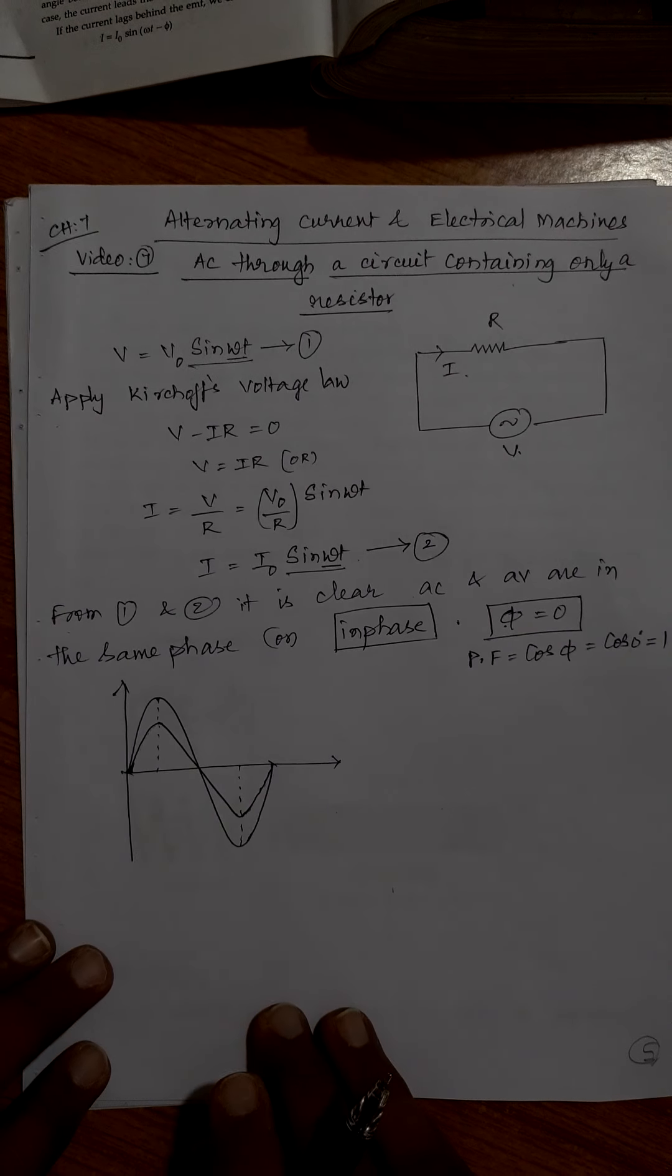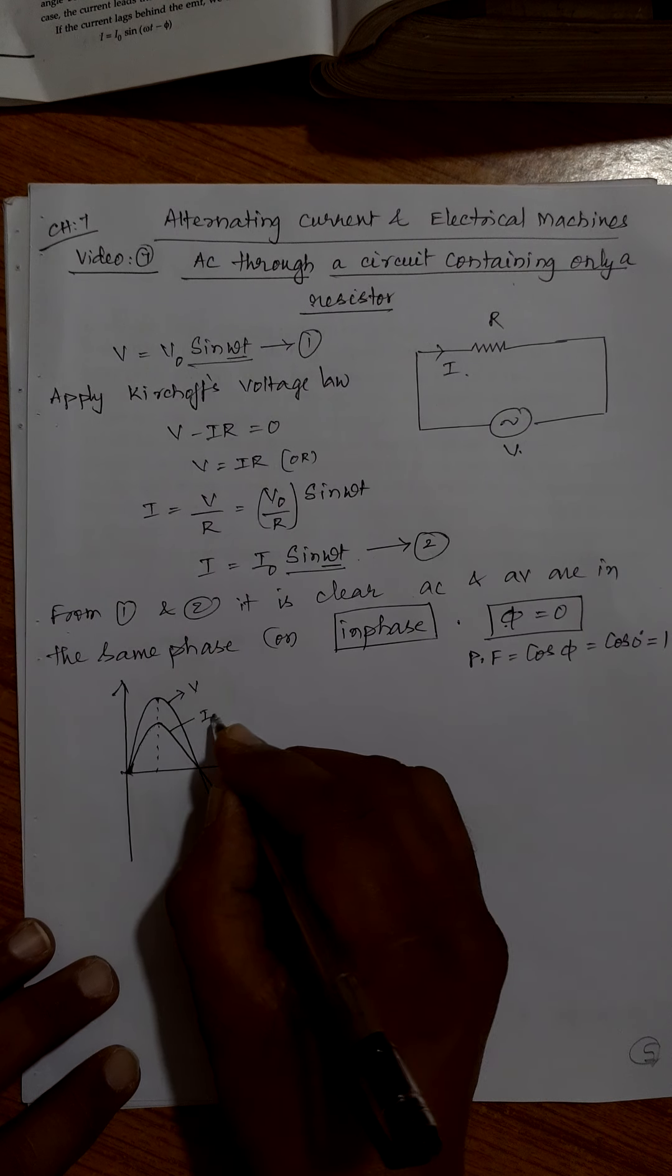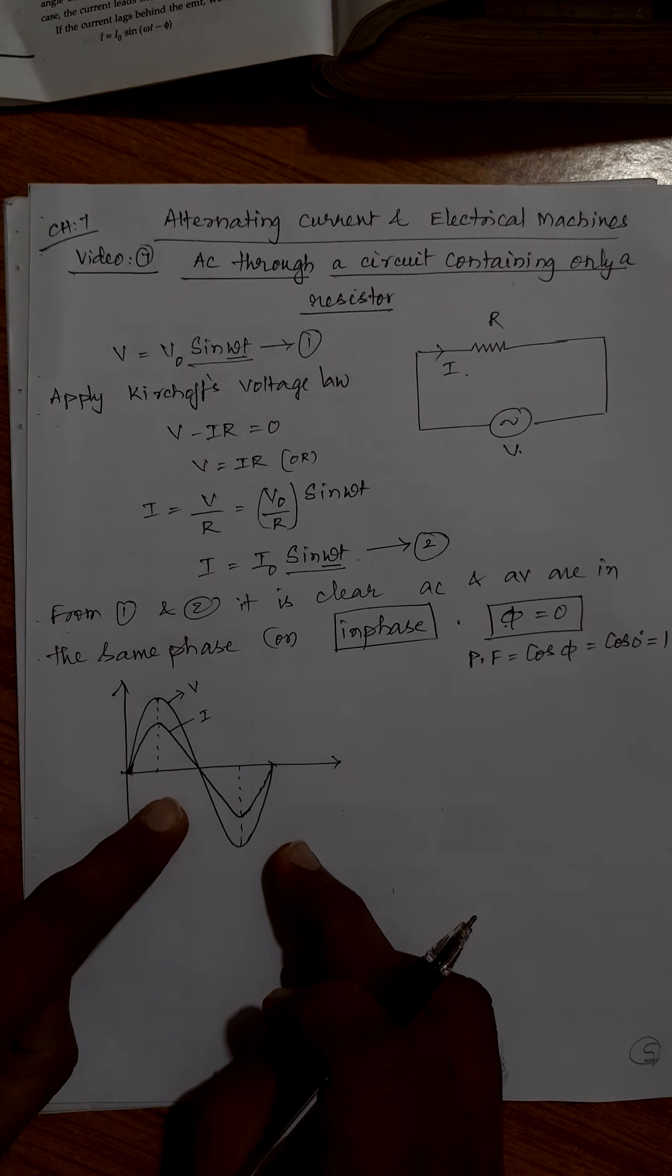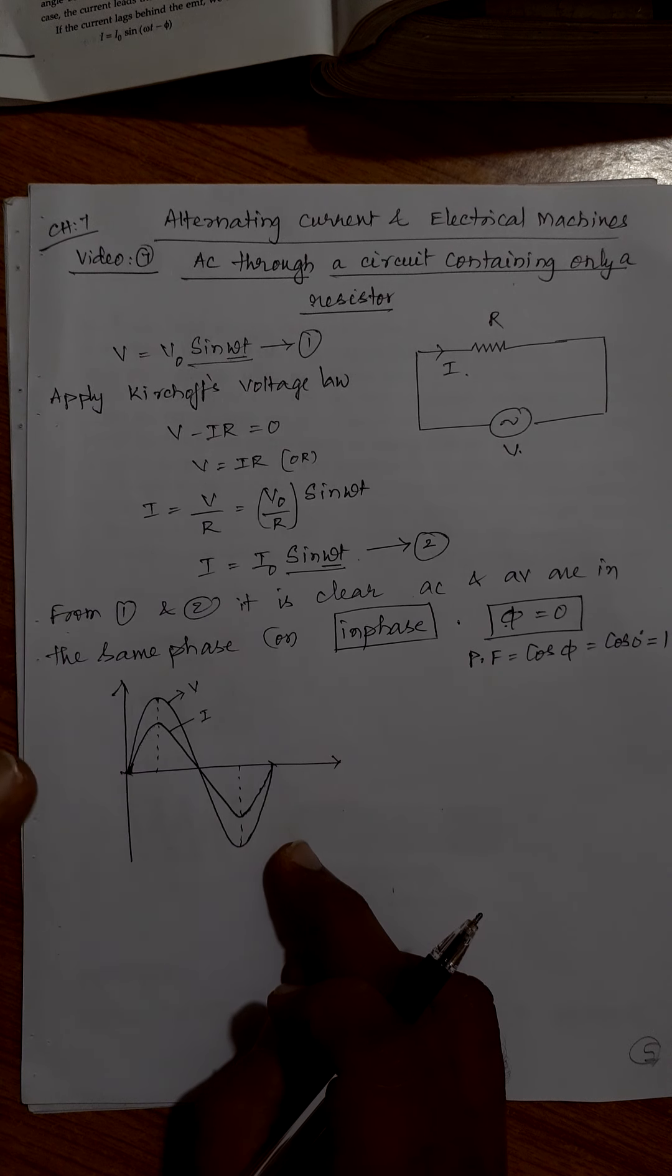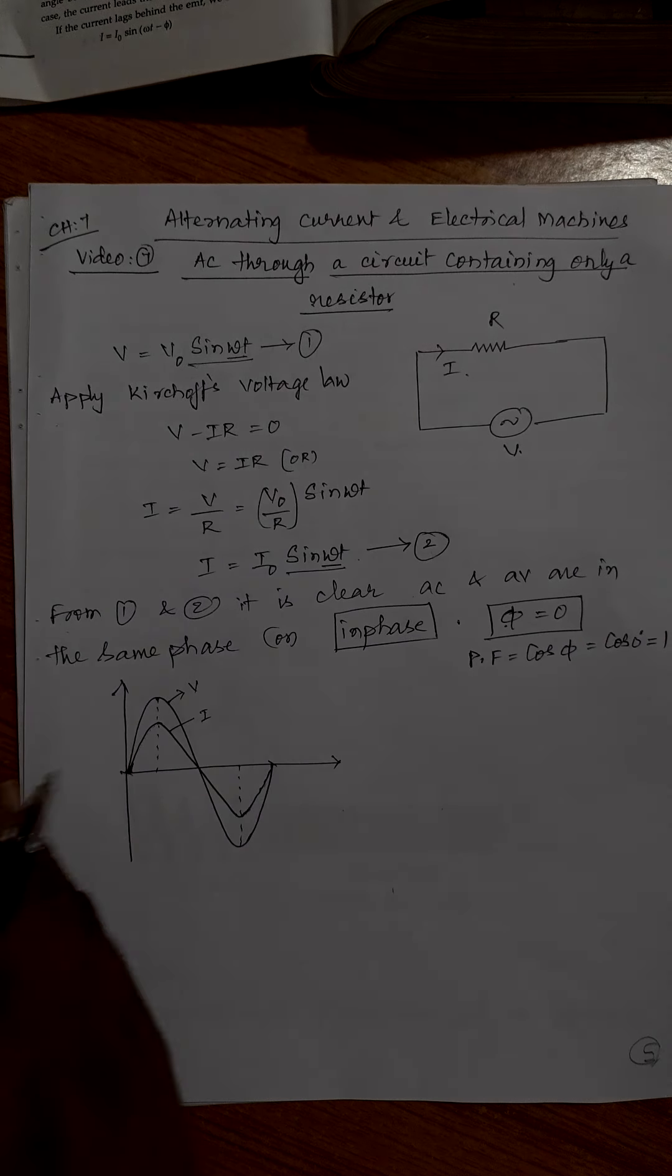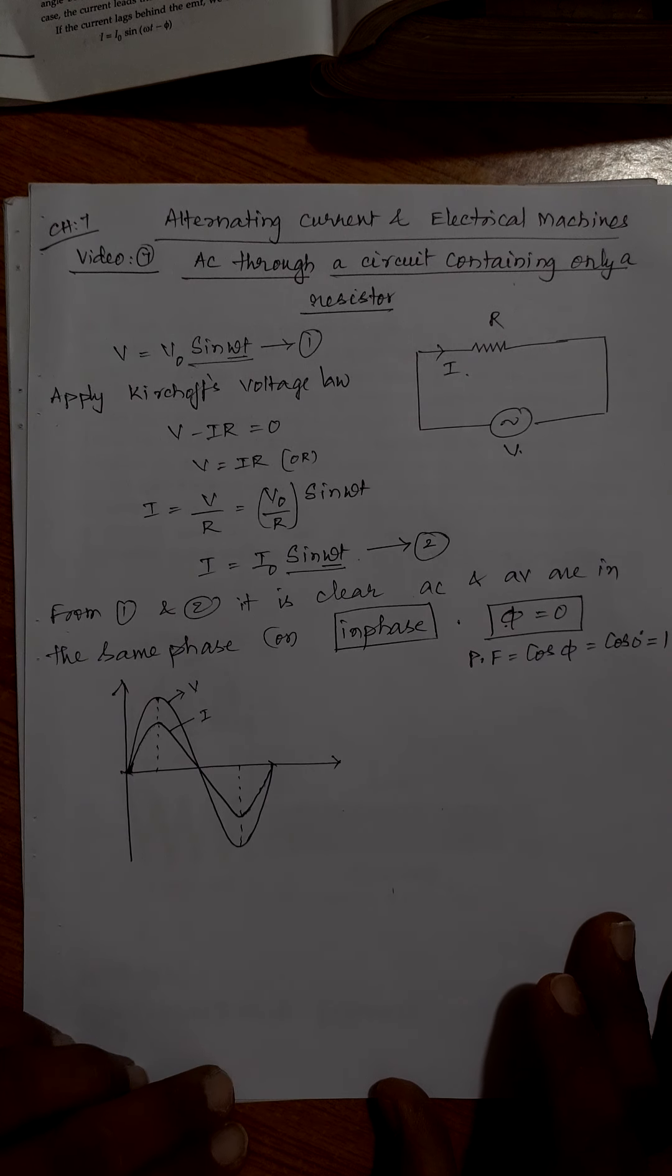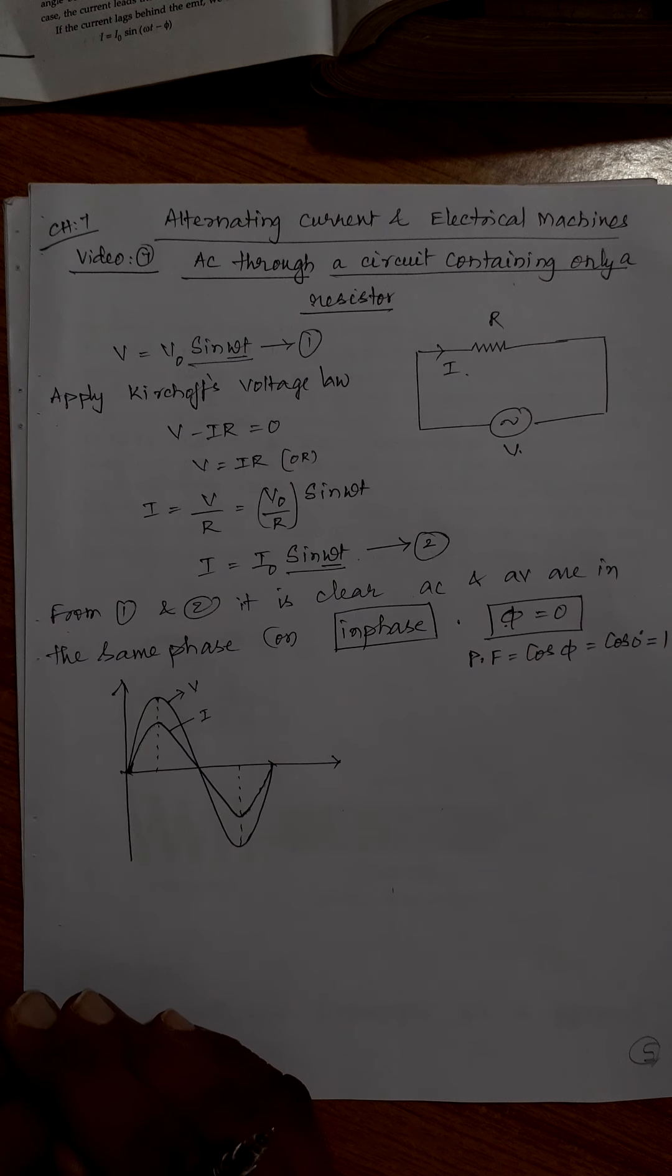They reach maximum simultaneously, reach negative maximum simultaneously, start simultaneously, complete one cycle simultaneously. This is for voltage, this is for current. This is the way we represent voltage and current in the form of a waveform showing the phase difference. It is clear that there is no phase difference between them.